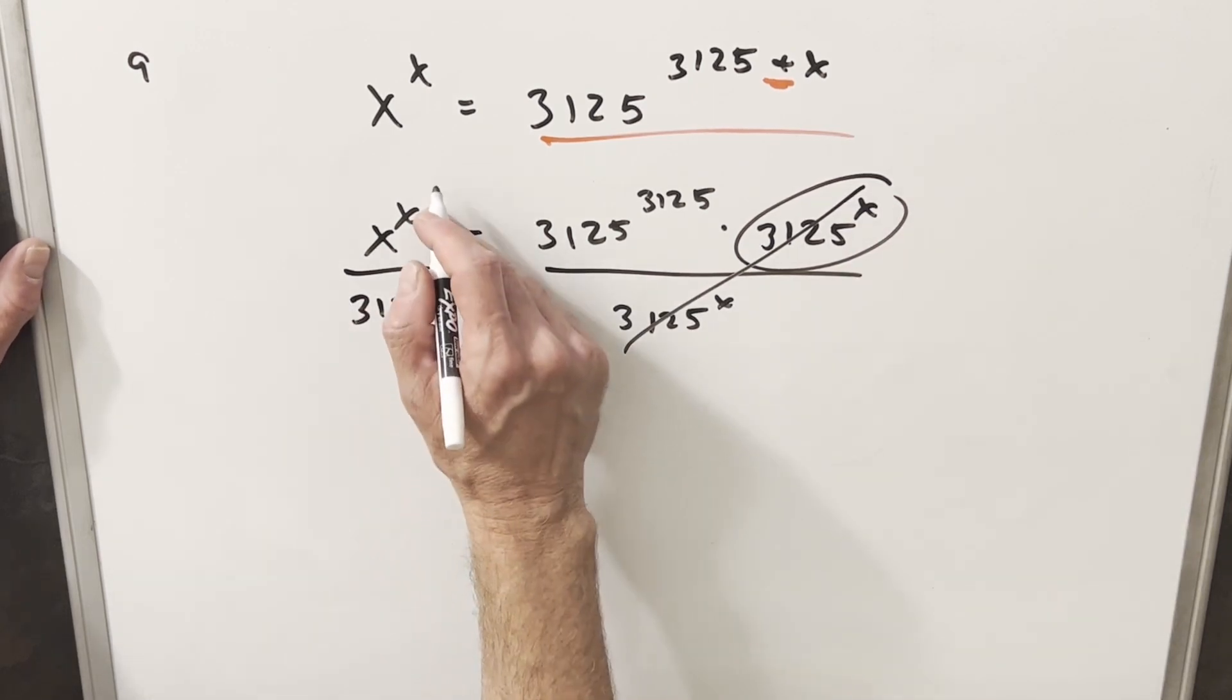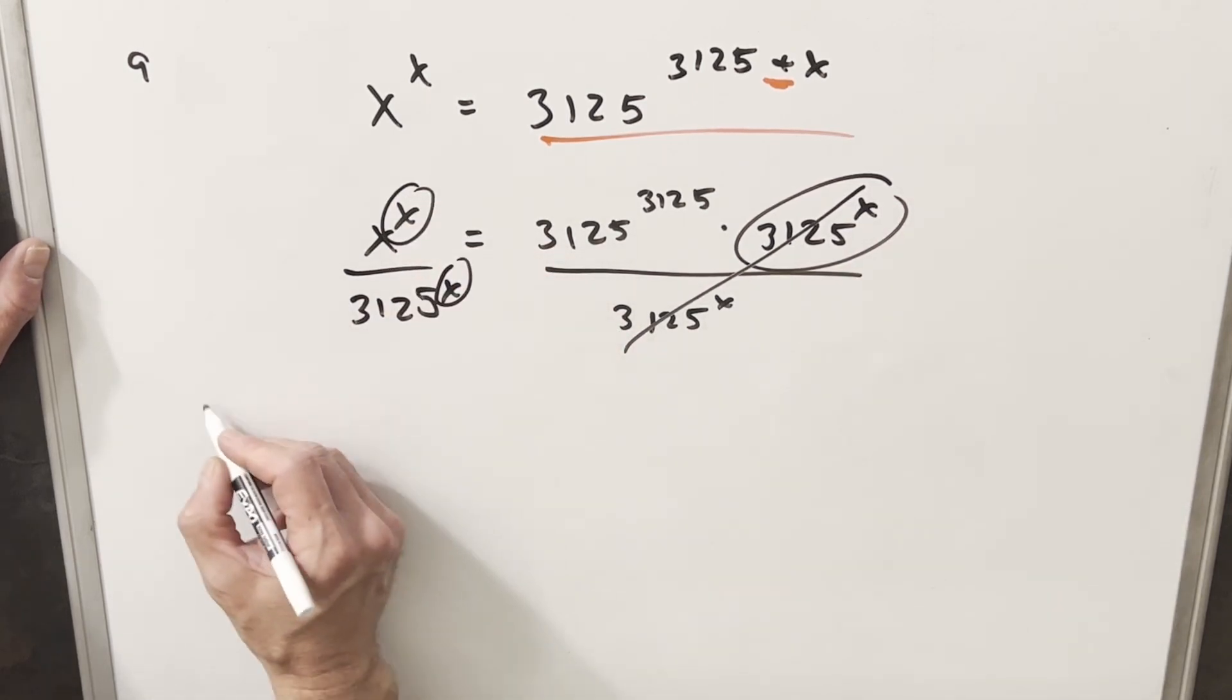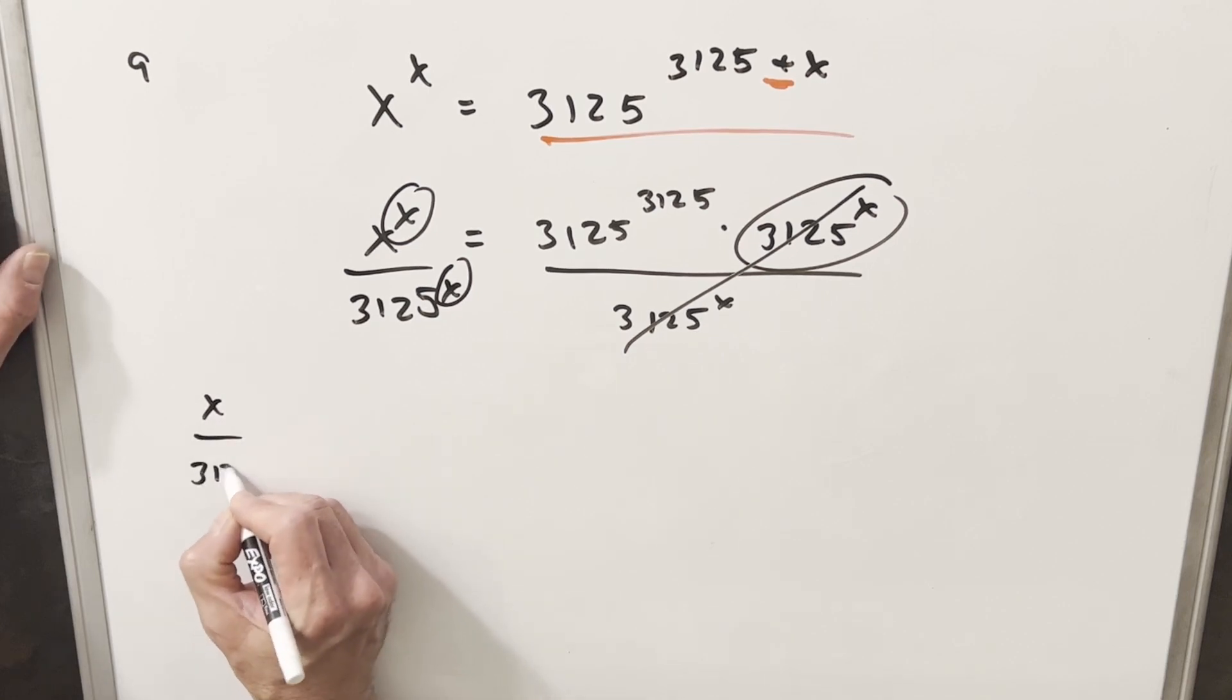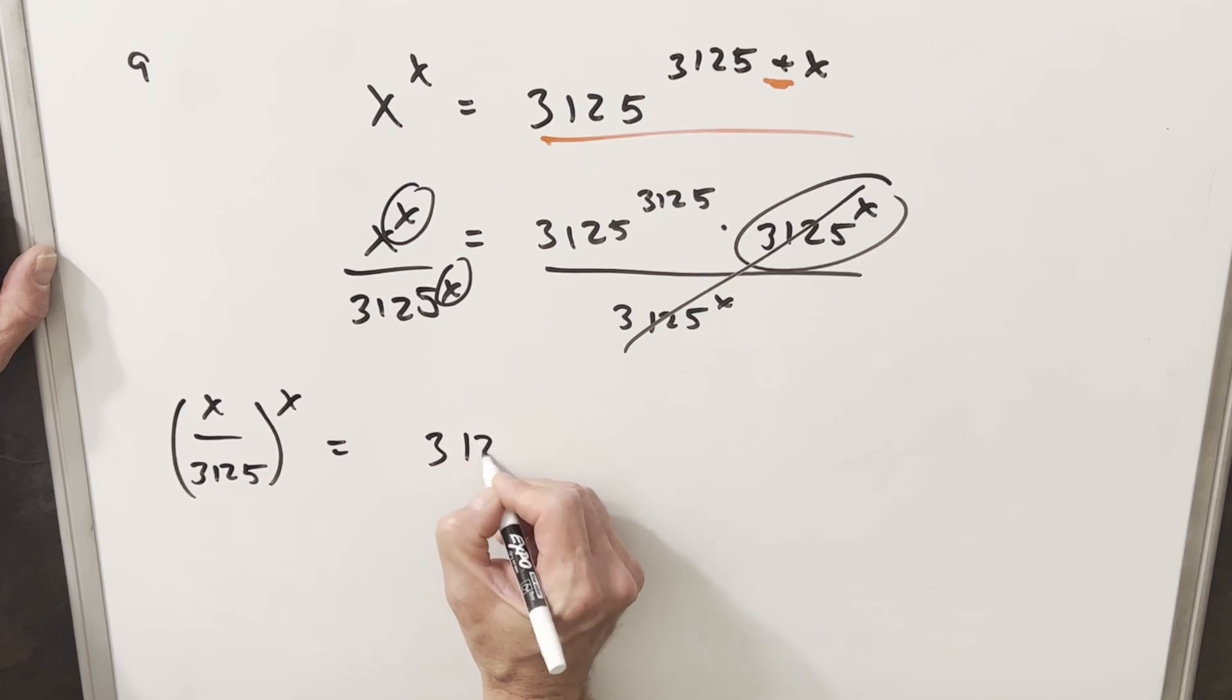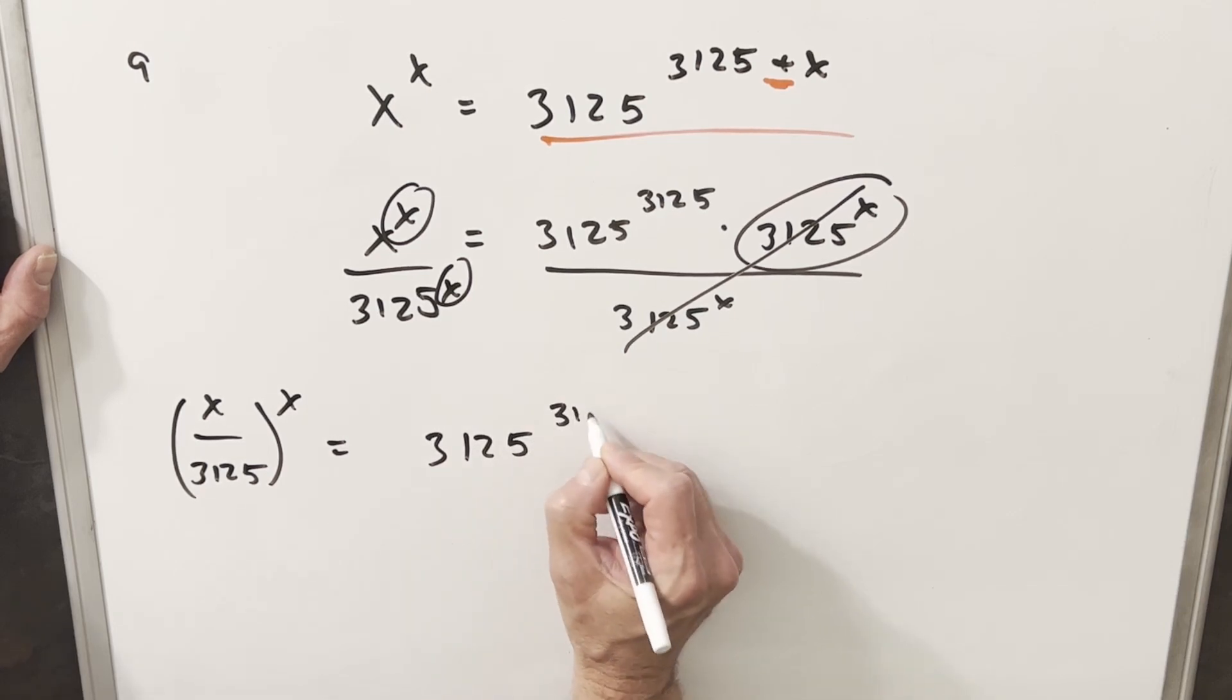And then on the left side, because we have the same exponent on these, I can write this as x to the 3125 all to the x equals 3125 to the 3125.